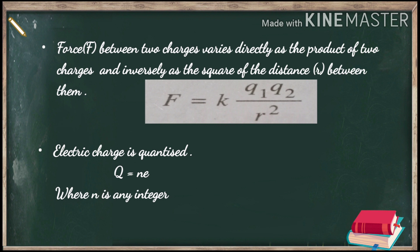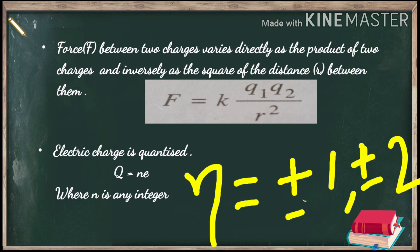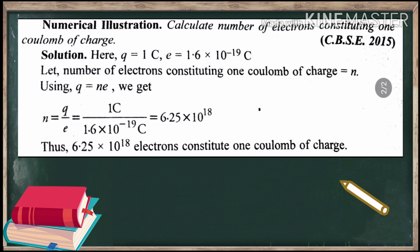Also, electric charge is quantized, meaning charge Q is equal to an integral multiple of the charge of an electron: Q = ne, where n is any integer (±1, ±2, and so on). Now discussing a problem using the same formula: to calculate the number of electrons constituting one coulomb of charge, we use Q = ne and can easily find the value of n.